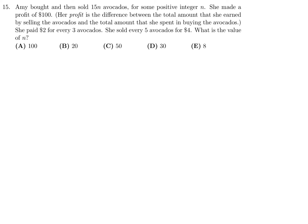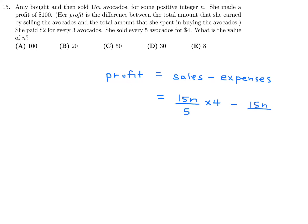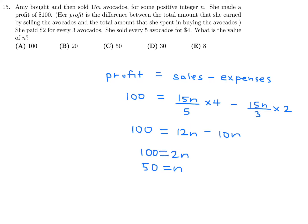Amy bought and sold 15n avocados for some positive integer n, making a profit of $100. She paid $2 for every 3 avocados and sold every 5 avocados for $4. Profit equals sales minus expenses: sales are (15n ÷ 5) × 4 = 12n, and expenses are (15n ÷ 3) × 2 = 10n. So 12n minus 10n equals 100, giving 2n equals 100 and n equals 50. Number 15, the answer is C.